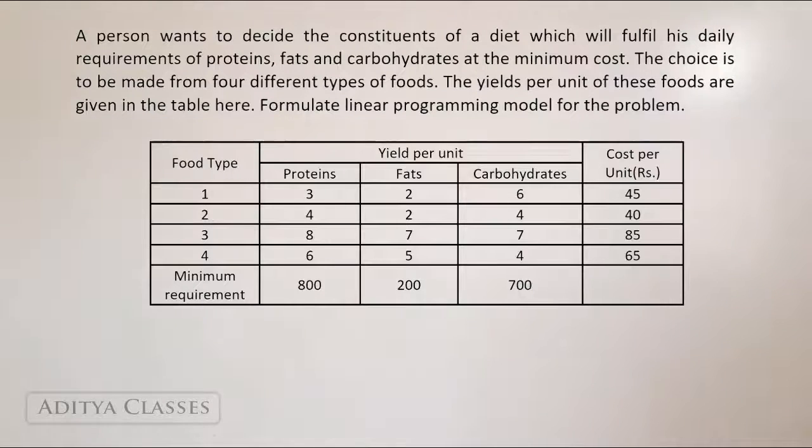Costs of each of the foods are given in the last column, we can see 45, 40, 85 and 65. And then minimum requirements, there are certain requirements of proteins, fats, carbohydrates. Those requirements are minimum 800 units of protein should be consumed, 200 units of fats and 700 units of carbohydrates should be consumed. Formulate the linear programming model for the problem.